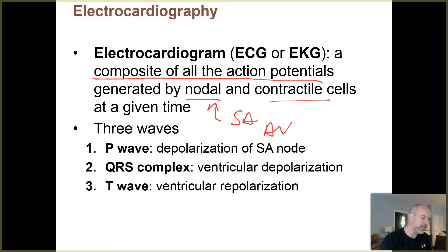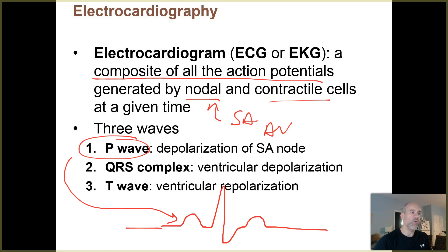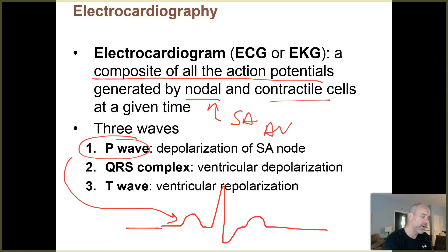When you look at a typical ECG tracing, it kind of looks like this: you have a little wave there, then you have a bigger wave, and then you have another wave over here. That's one cycle, and then you see that repeated again. That first wave you see is called the P wave. A patient gets hooked up to electrodes that can detect these subtle electrical activities occurring around the heart. The P wave occurs because depolarization is occurring at the SA node and around your atria as well.